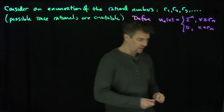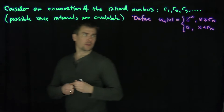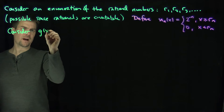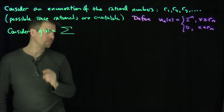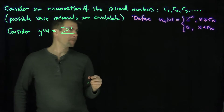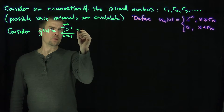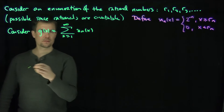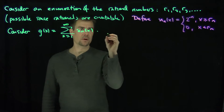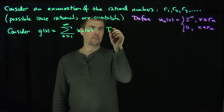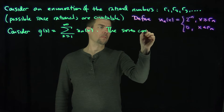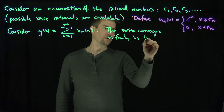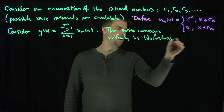What I'm going to do is sum up all these functions. Consider g of x, which is the sum as n goes from 1 to infinity of u_n of x. By the Weierstrass M-test, this is a uniformly convergent series — this series converges uniformly by the Weierstrass M-test.